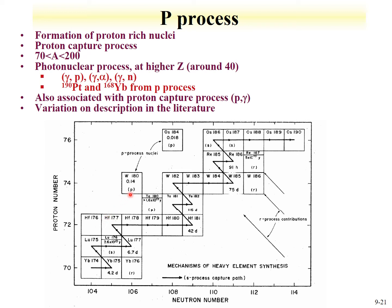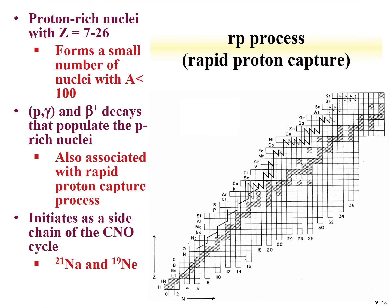The final process for completing the formation of proton-rich nuclei is the RP process — rapid proton capture. This occurs with relatively light elements from Z of 7 to 26. Proton-gamma reactions and subsequent positron decay populate these proton-rich nuclei. This is initiated as a side chain of the CNO cycle, for instance with sodium and neon isotopes.